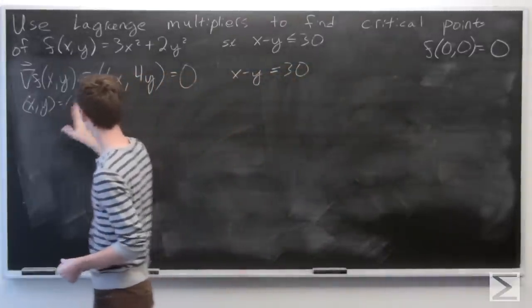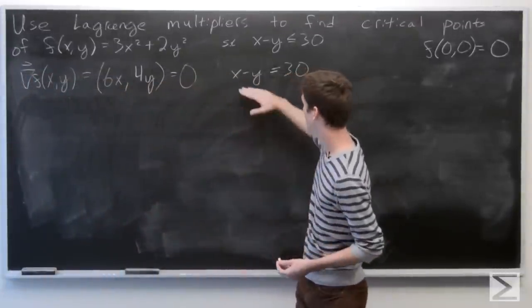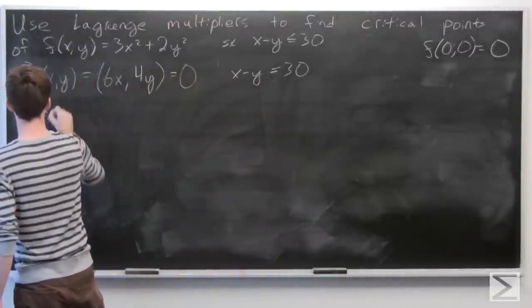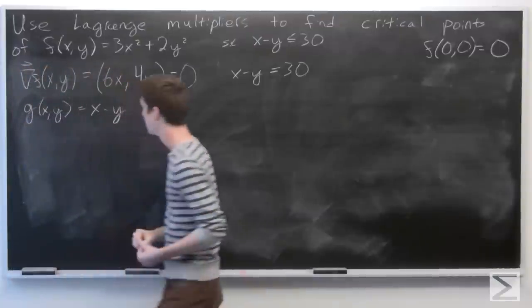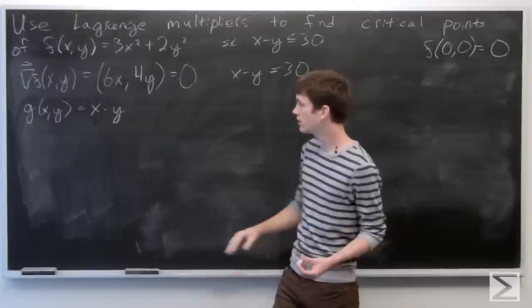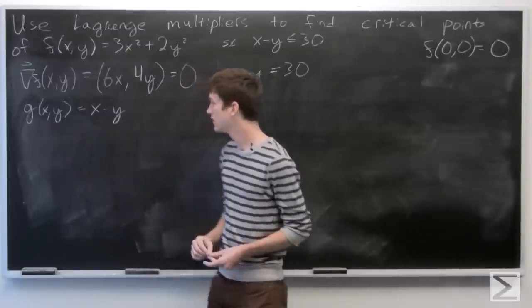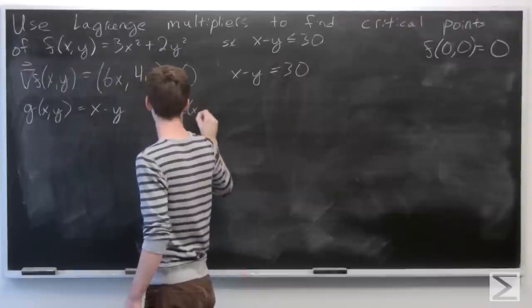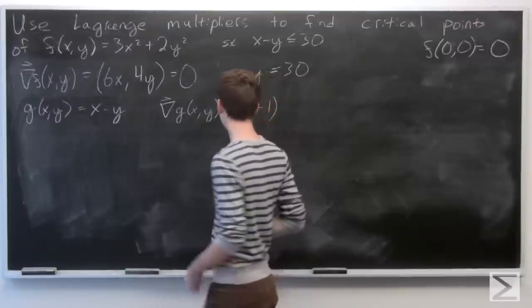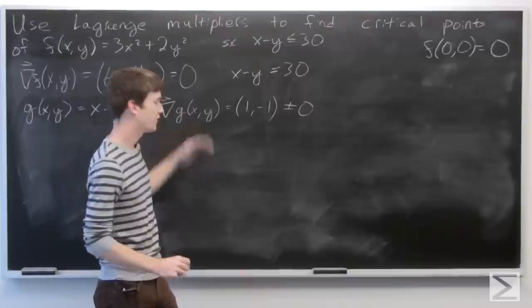We want to use Lagrange multipliers. We'll first verify that any points subject to our constraint x minus y equals 30 — letting g of x, y be x minus y — we want to verify that no points satisfying the constraint have gradient vector of g equal to 0. Our gradient vector of g of x, y is equal to (1, negative 1), and that does not equal 0. So for any point that satisfies this constraint, our gradient vector is going to be non-zero.